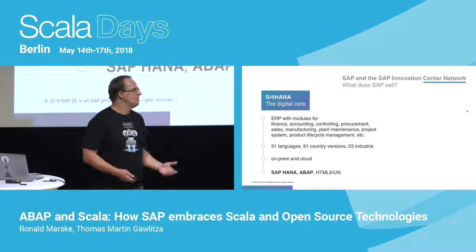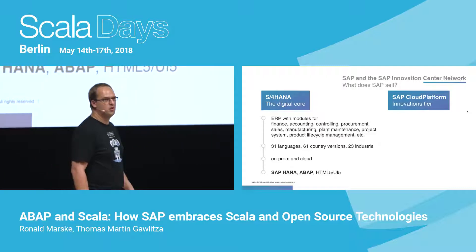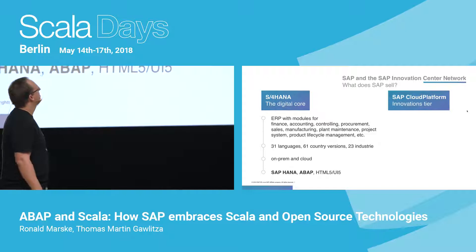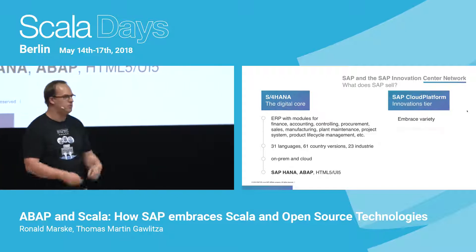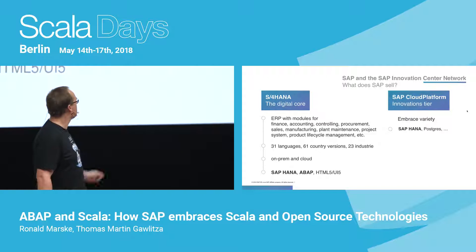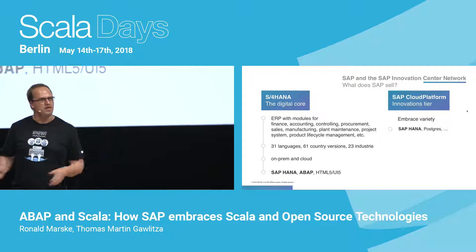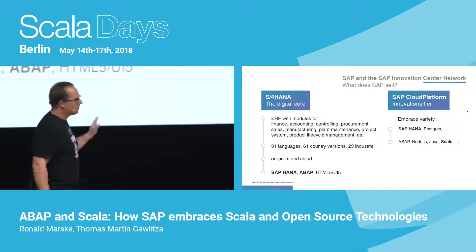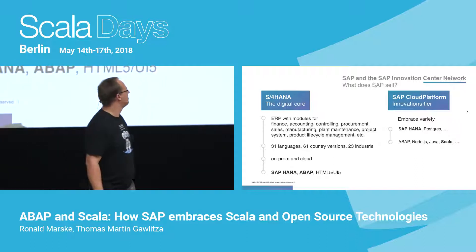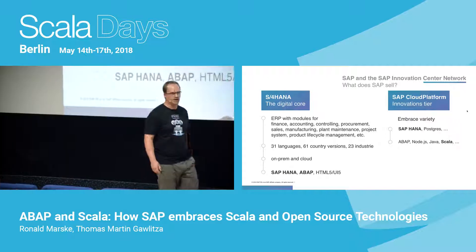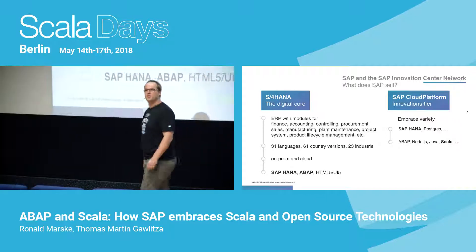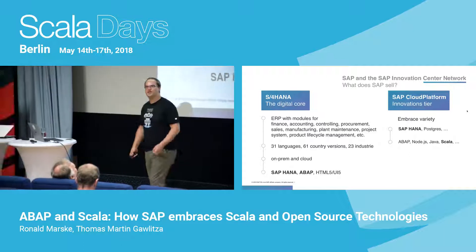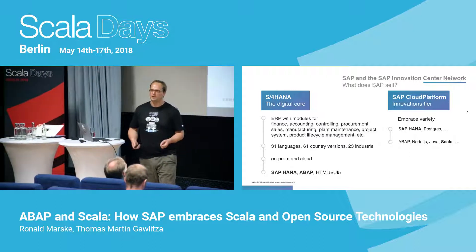There's also another world at SAP: the cloud platform world, where innovation is happening. Here we embrace variety. We have a couple of databases — HANA, of course, Postgres, and so on — and we support a couple of programming languages. One main programming language is ABAP, but there is also JavaScript, Java, and nowadays we also support Scala developers.